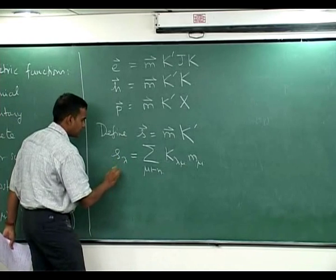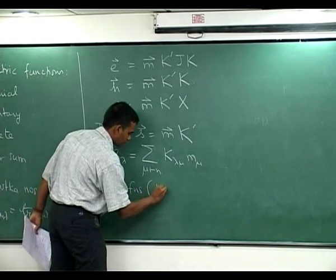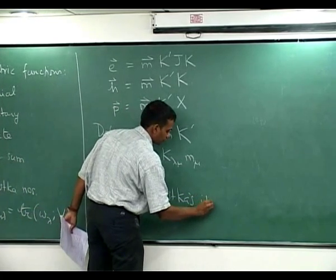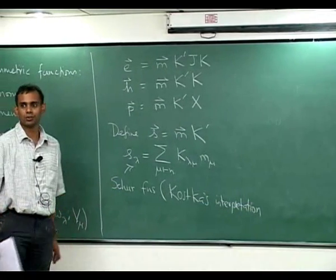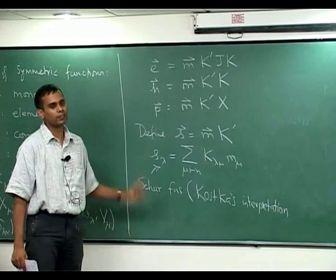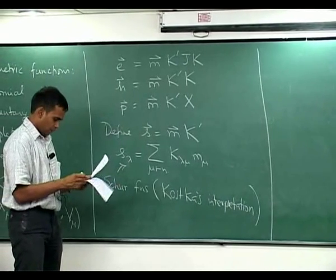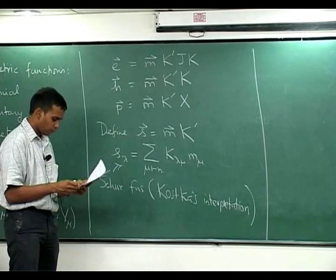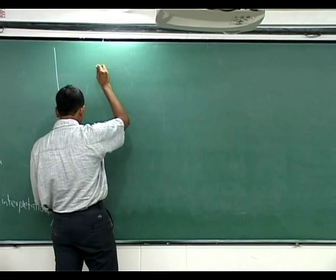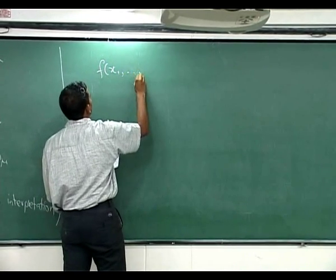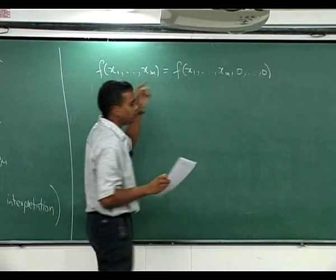These are called the Schur functions as interpreted by Kostka. I am doing things a bit backwards - this was not the first definition of Schur functions; this was the theorem of Kostka. But we will go to the other definition and present that as a theorem. Classically they were studied as symmetric polynomials in a finite number of variables. The usual way to go from infinitely many variables to finitely many variables is to write f(x_1, ..., x_m) for f(x_1, ..., x_m, 0, 0, ...) - you just set all but finitely many variables to zero.